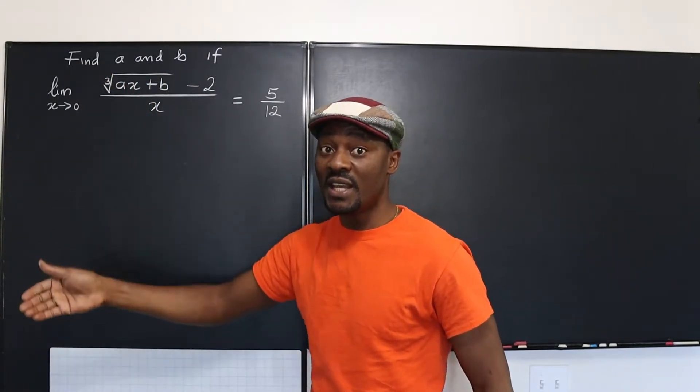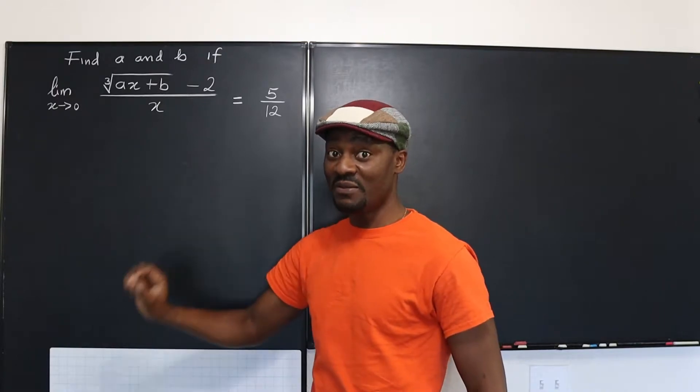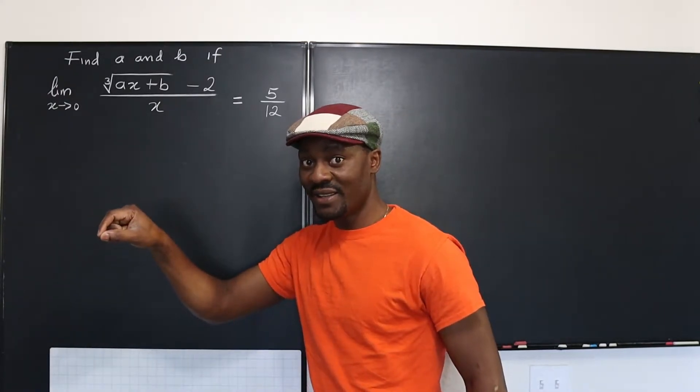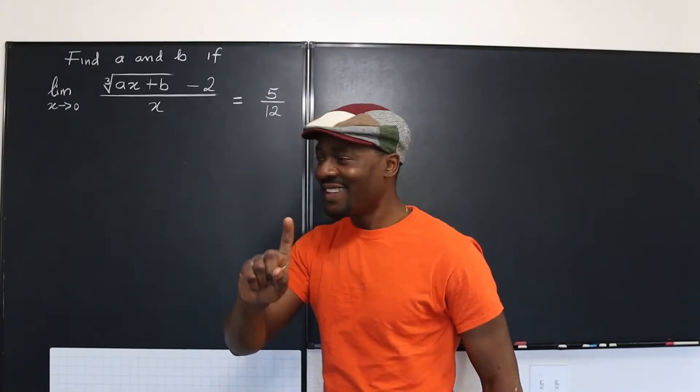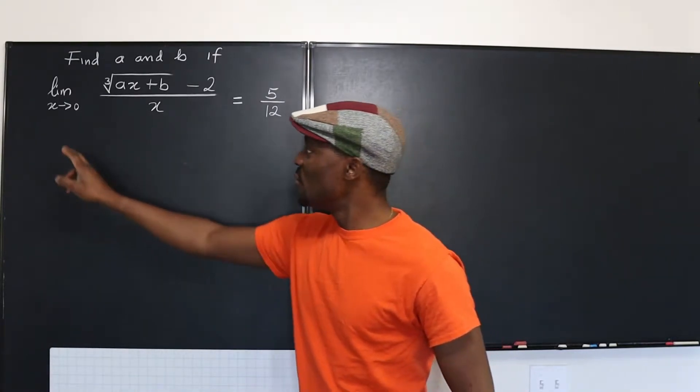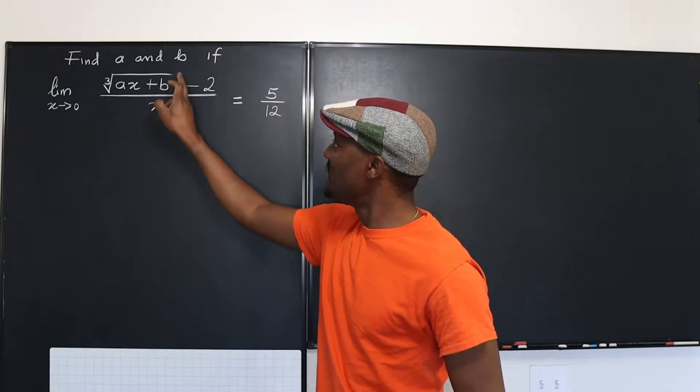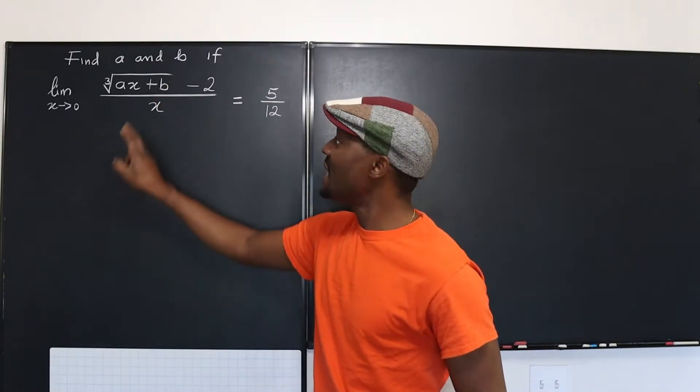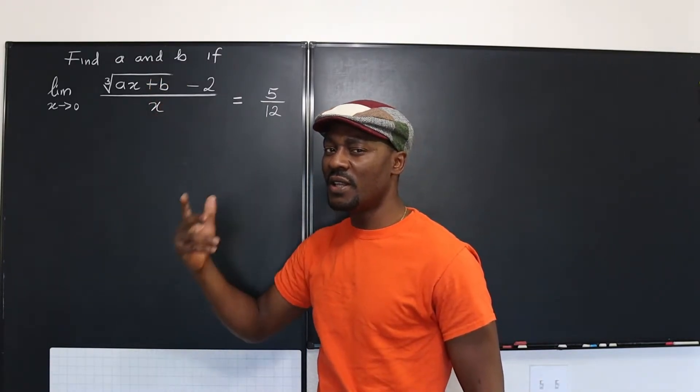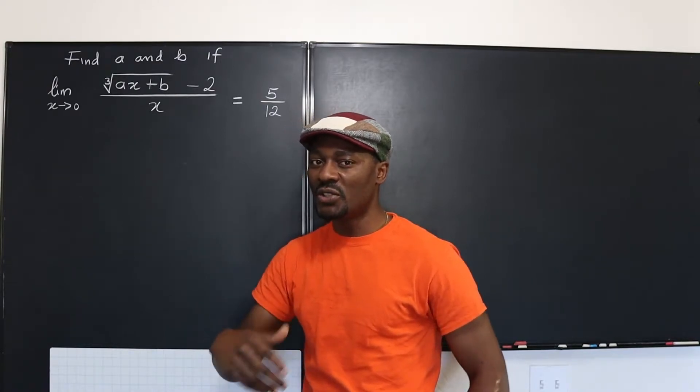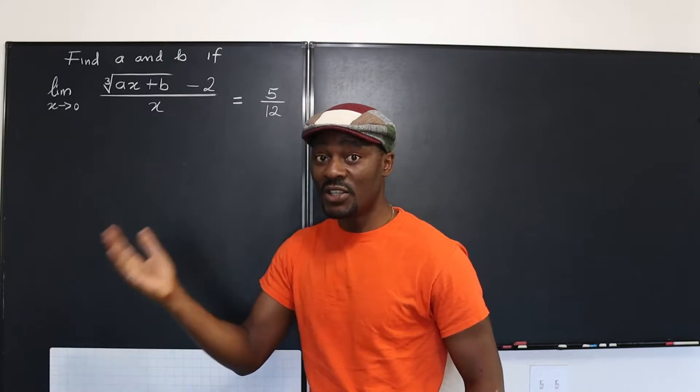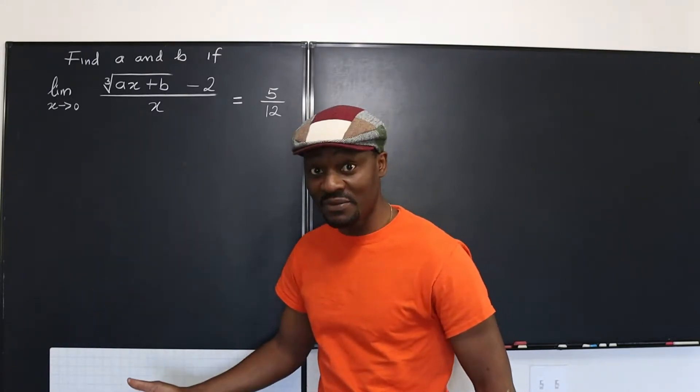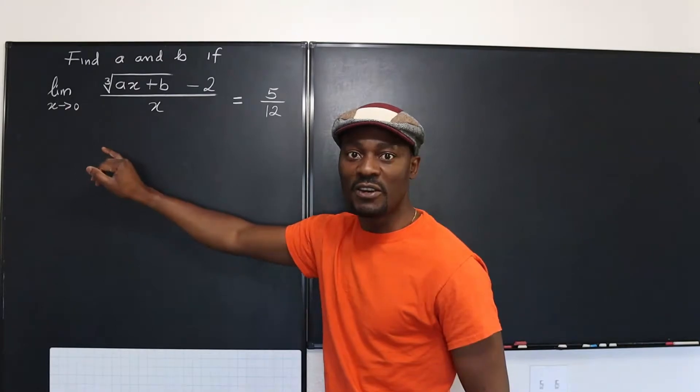And remember for the limit to exist, the function itself has to be defined at that point. Unless what you're going to get when you do the direct substitution will be zero over zero. Because if you get zero over zero, then you start thinking, okay, there must be some algebraic manipulation I could do to get rid of the discontinuity or the state of being undefined, which means you can cancel this X out.